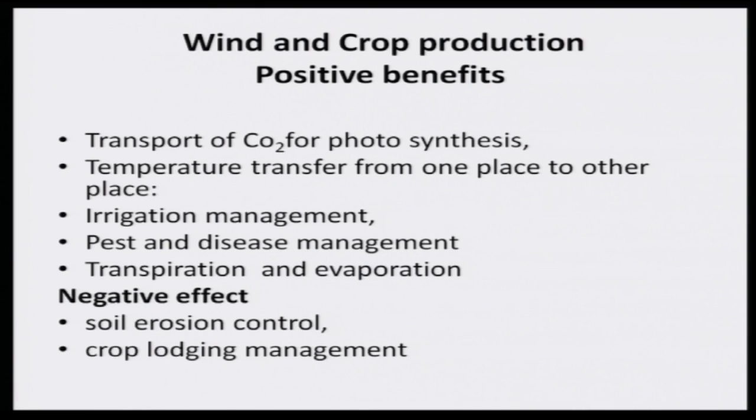Wind is very important for crop production and many other things. The atmosphere contains carbon dioxide, which is very important for photosynthesis. Under climate change, CO2 is increasing, but CO2 is essential for photosynthesis. By the Hill reaction, water is split into hydrogen and oxygen, and combined with carbon dioxide, carbohydrates are produced by plants. In the absence of CO2, there is no photosynthesis. Wind transports carbon dioxide to the plant, so the plant gets enough CO2 for its photosynthetic production.